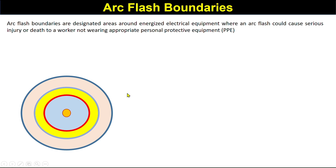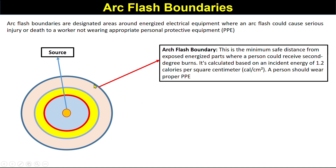The outermost boundary around the source equipment is called the arc flash boundary — this is the minimum safe distance from exposed energized parts where a person could receive second-degree burns. It is calculated based on an incident energy of 1.2 calories per square centimeter. A person must wear proper PPE within this boundary.